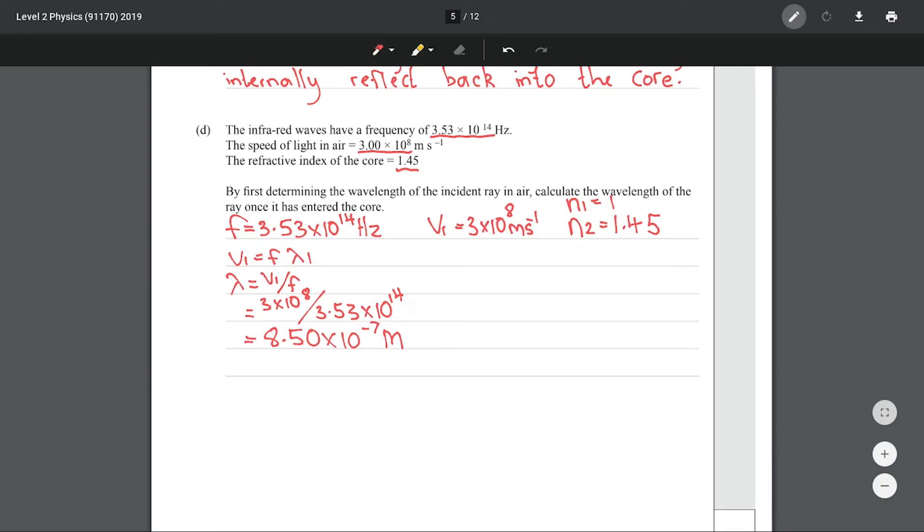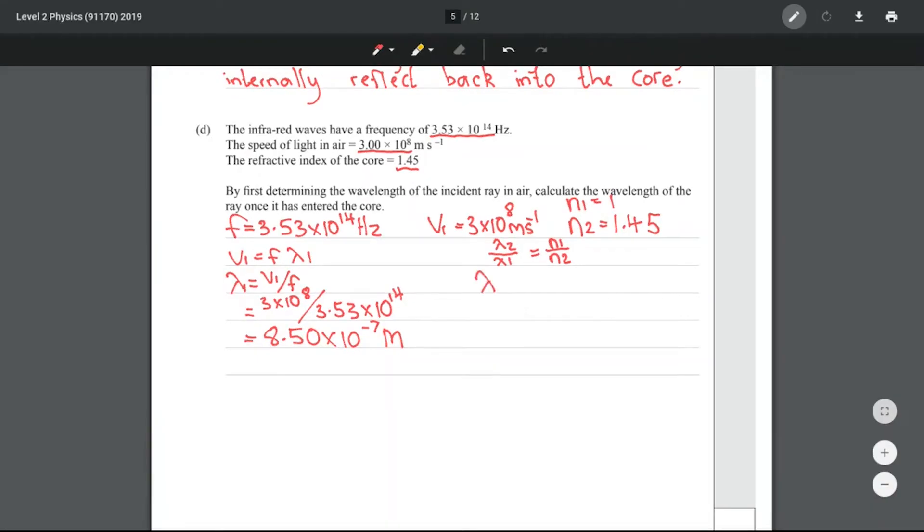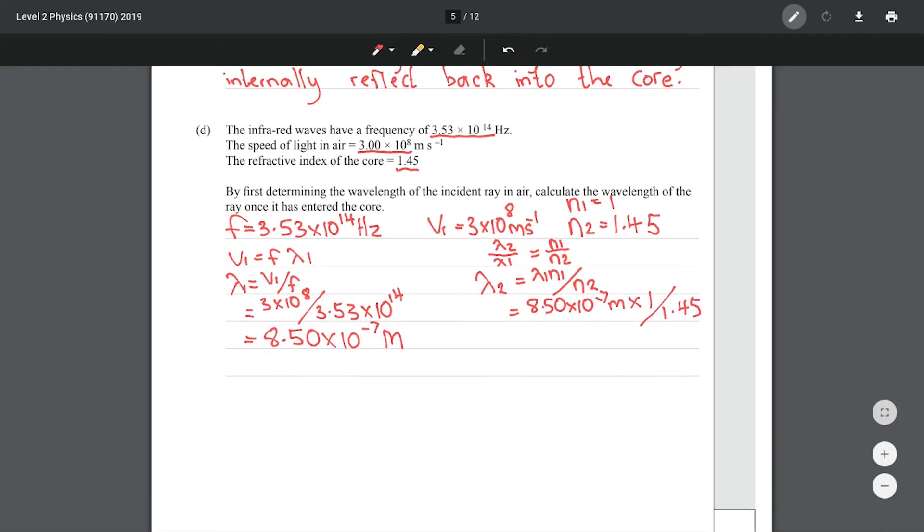Now looking at your formula sheet we have this relationship here, which is very handy because we know both refractive indices and we know our lambda 1. What we're trying to find is our lambda 2, our wavelength in the core. We can solve this by multiplying both sides by lambda 1. Putting in our numbers gives me 5.86 times 10 to the minus 7 meters.